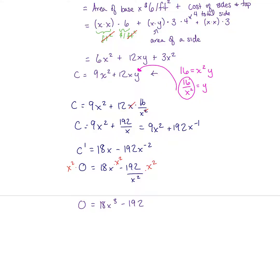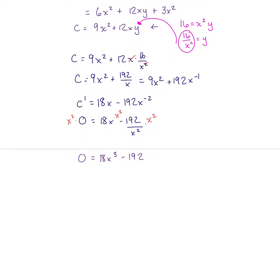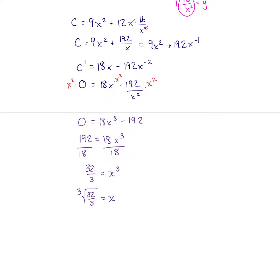We need to solve for x. We'll get rid of that x squared by multiplying through by x squared. Now we're down to 18x to the third minus 192. We need to solve for x cubed. We'll add 192 to both sides, divide by 18, end up with 32 thirds equals x cubed, and then take the cube root of 32 thirds. That's what our x value is. Here is our exact answer.